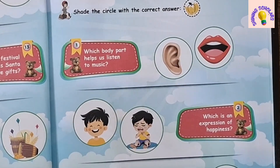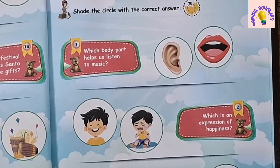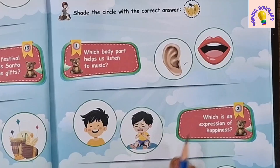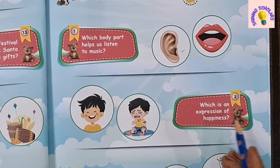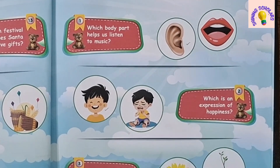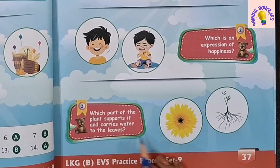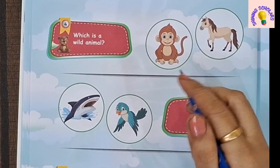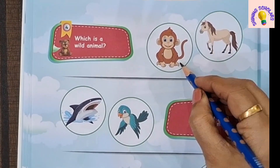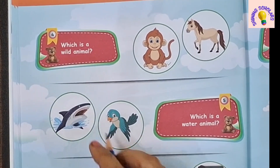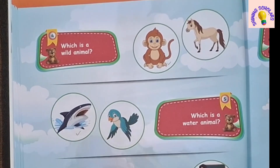Set 9. First question: Which body part helps us listen to music? Ear. Which is an expression of happiness? This is the happiness expression. Which part of the plant supports us and carries water to the leaves? Root. Which is the wild animal? Monkey is a wild animal. Which is a water animal? Shark is a water animal.